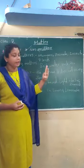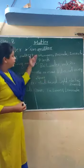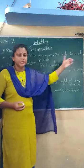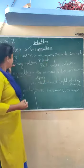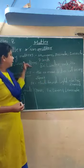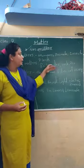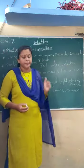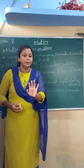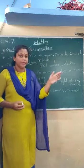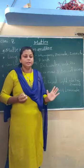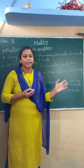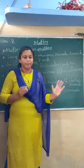So now we have a clear picture: living matters are humans, animals, insects, and plants. Non-living matters are soil, water, rock, and air. Matter is anything which occupies some place and has some weight.